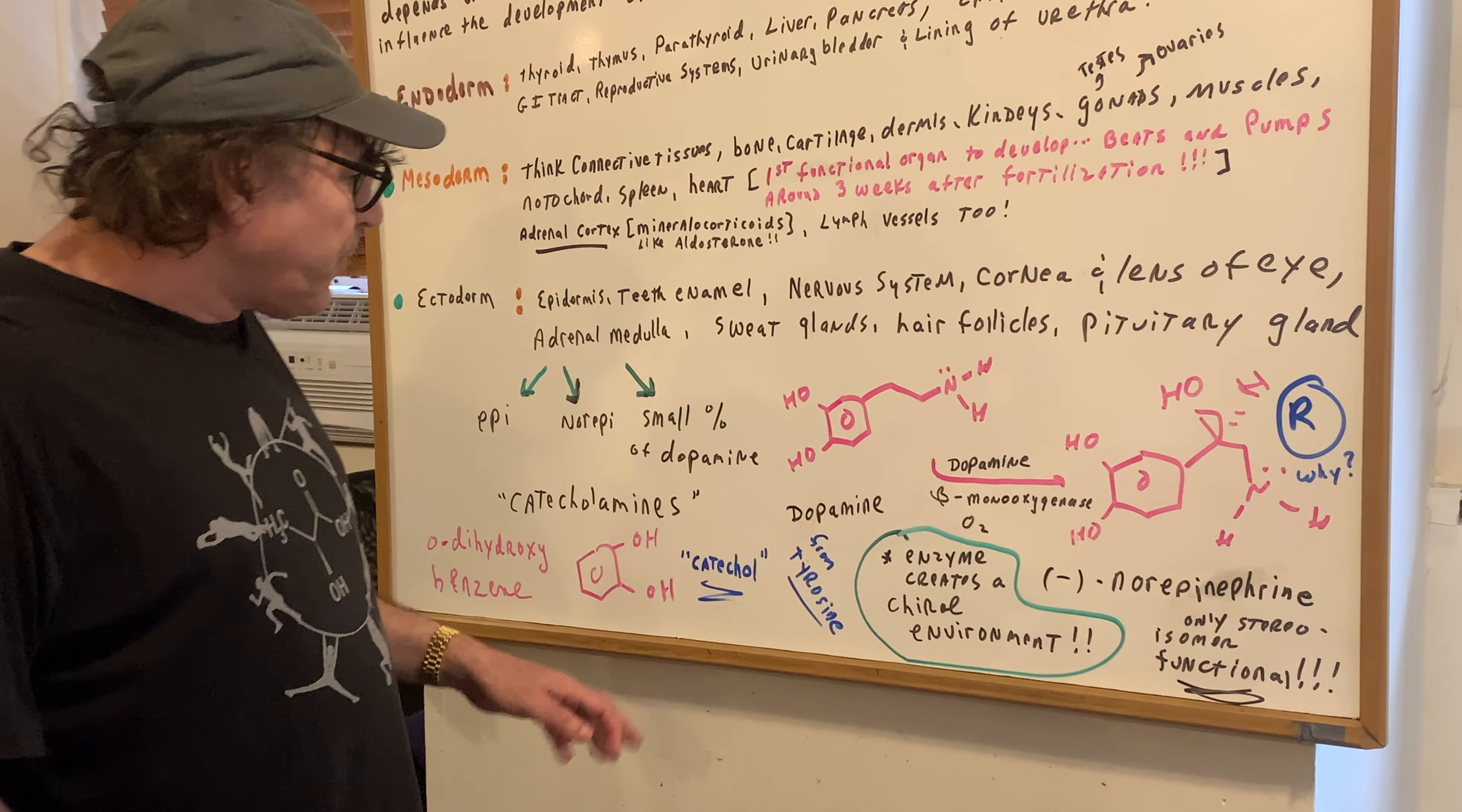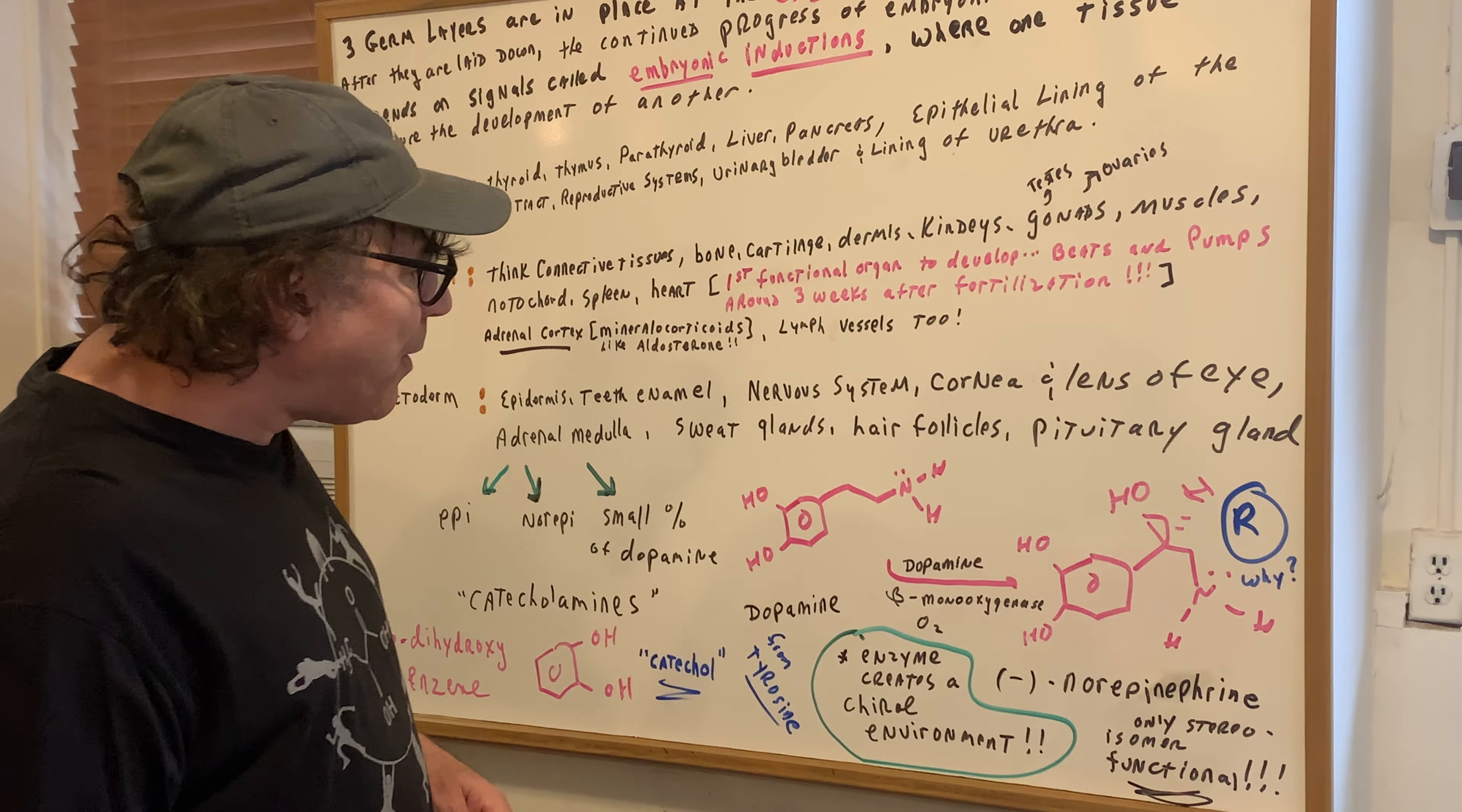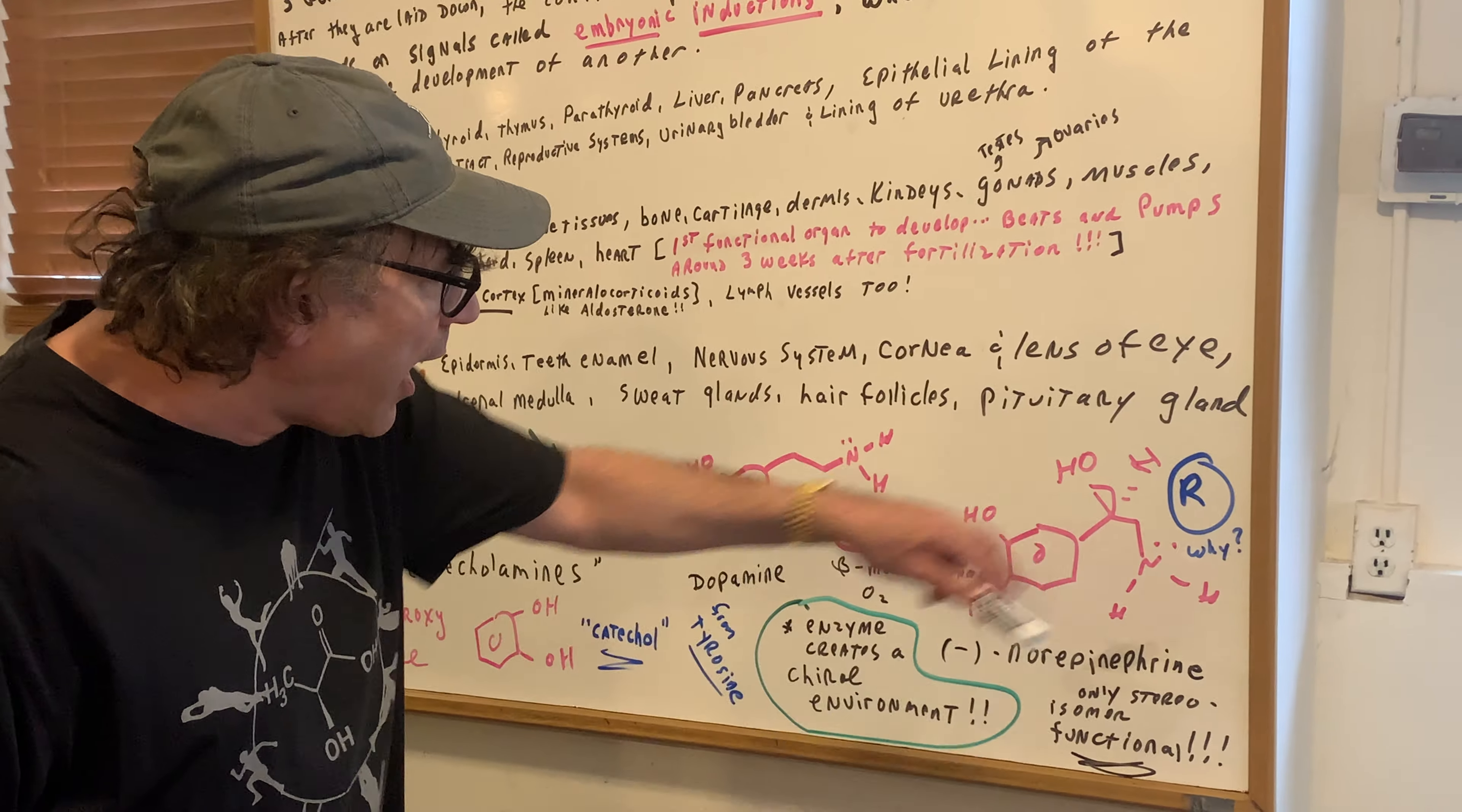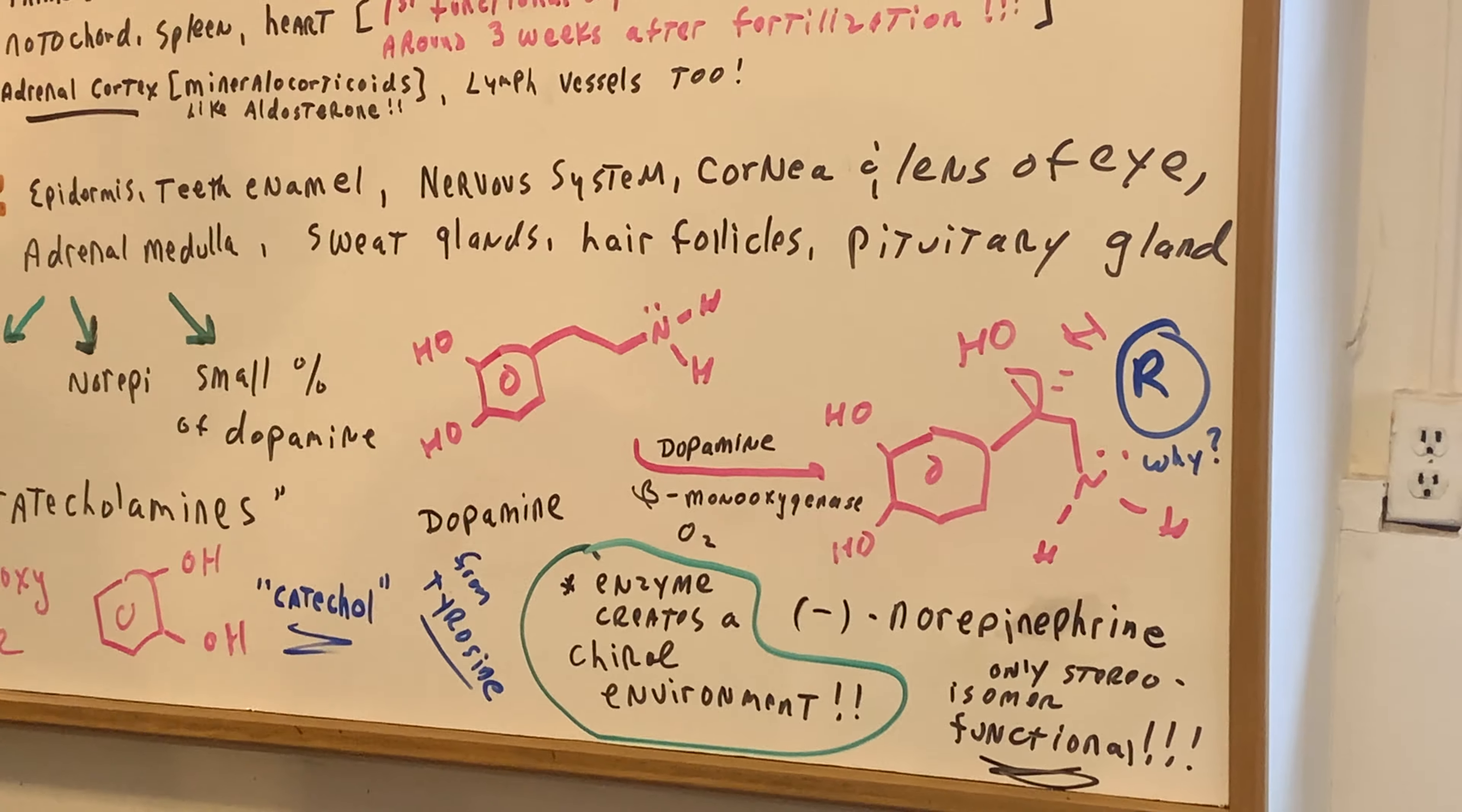Tyrosine, as you can see, is going to form dopamine. And as you can see, you can see the catechol structure. In the presence of dopamine, and here it's called dopamine beta monooxygenase and oxygen, we add an oxygen, and we produce this molecule, and this is the minus form of norepinephrine. So what I've done is simply added an oxygen.